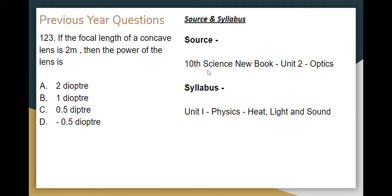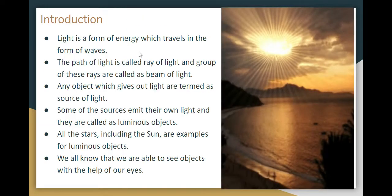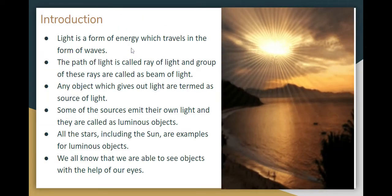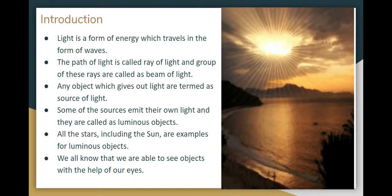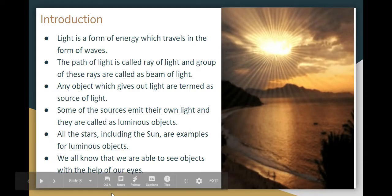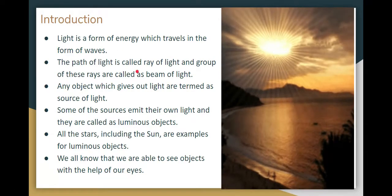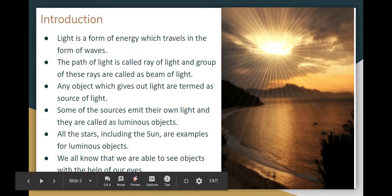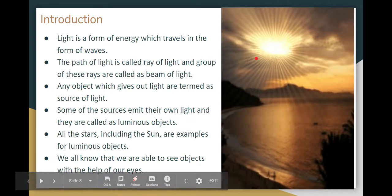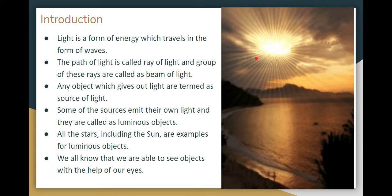In this chapter, we will cover Unit 1 Physics: Heat, Light and Sound — specifically the light part. Light is a form of energy and travels in the form of waves. A single path of light is called a ray of light, and a group of rays is called a beam of light.